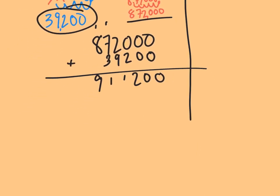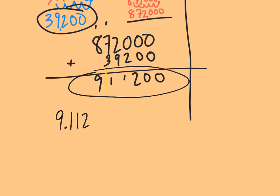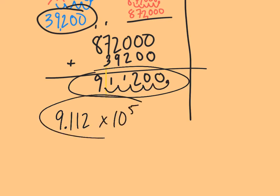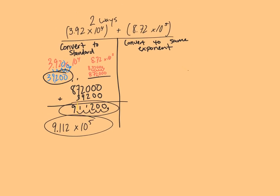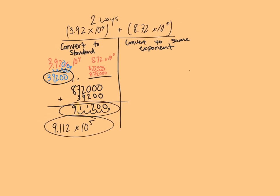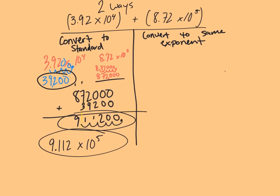Now I'm just going to write that in scientific notation, placing my decimal point in between my first digits to get a number between one and ten. So I get 9.112. In order to actually end at this same number, I need to move five spots, so that's times 10 to the fifth. That's one way we can get to an answer. We'll end up with the exact same answer with a different method. So here we converted both to standard notation, added them, then wrote the answer in scientific notation.